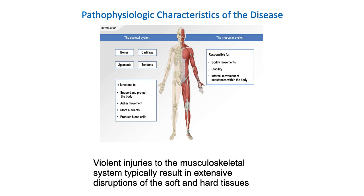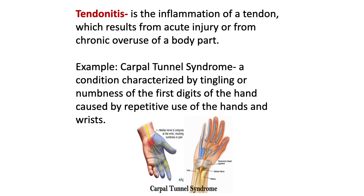Let's discuss individual musculoskeletal injuries. First is tendonitis — inflammation of a tendon resulting from acute injury or chronic overuse of a body part. A classic example is carpal tunnel syndrome, characterized by tingling or numbness of the first digits of the hand caused by repetitive use of the hands and wrists, commonly seen in office workers who are frequently typing.